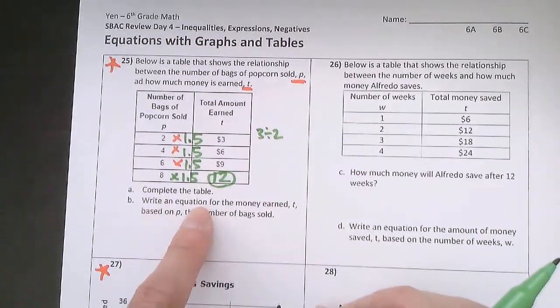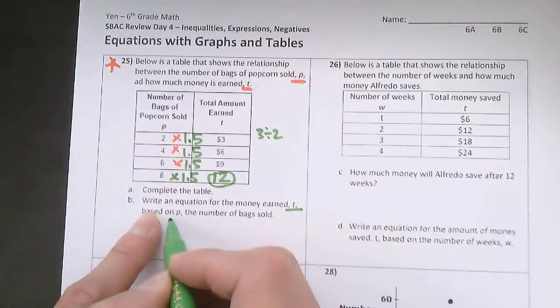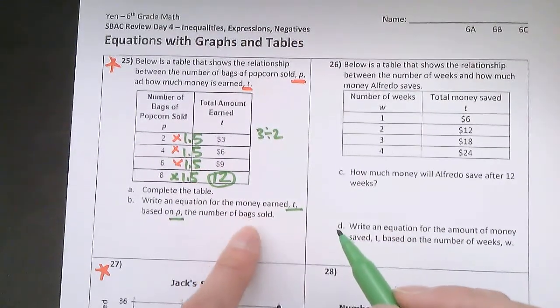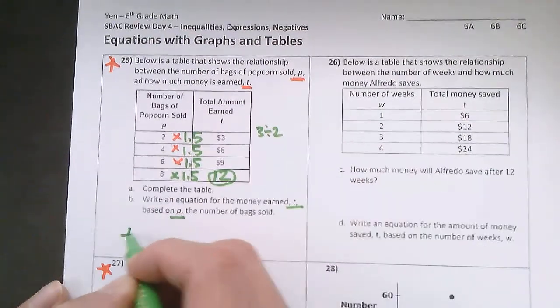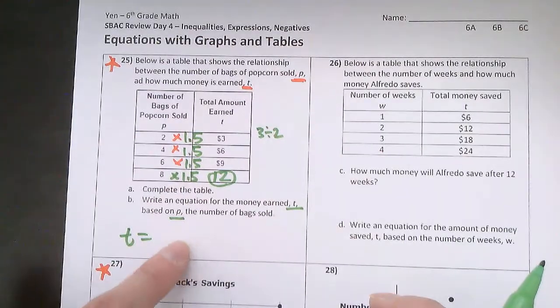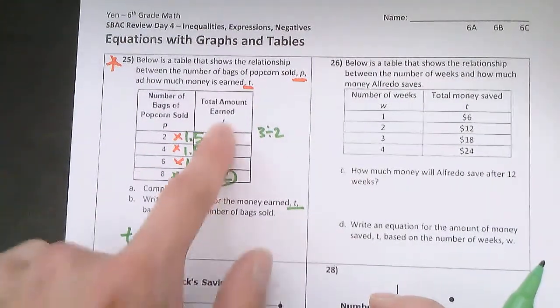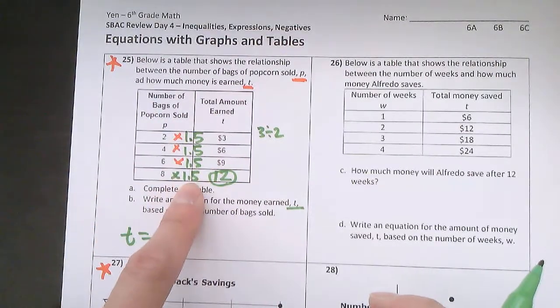Now it says to write an equation for the money earned, which is T, based on P, the number of bags sold. So I know my equation, this is write an equation for T. So T is equal to something. The amount of money that you earned is equal to, and I think to myself, well, how did I get each of these numbers? I multiplied whatever was here times 1.5.